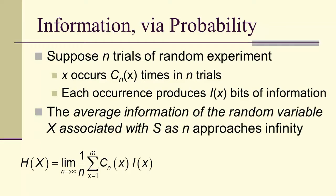So the entropy is the average. The number of times each X occurs is C_N(X), and then we have also the information for each occurrence of X. And when we take that limit...